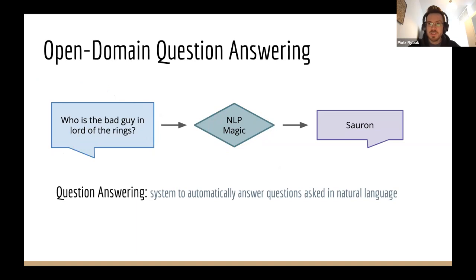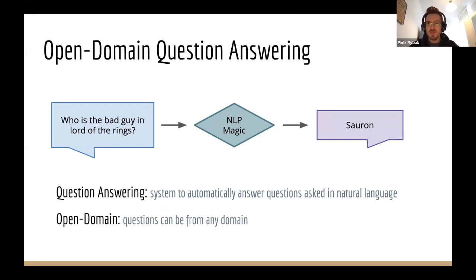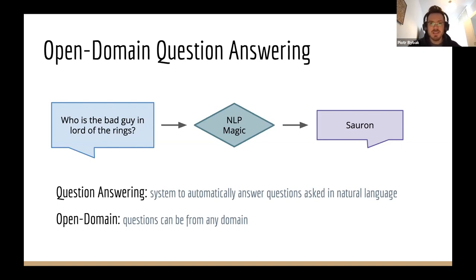Open domain pretty much means that questions can be from any domain. This is not exactly true because usually when we have a particular dataset or task, we are forced to work within some domain — for example, board game questions. But in practice, usually these are factoid questions from Wikipedia, news, and so on. In general, you just want to ask any question and get an answer.